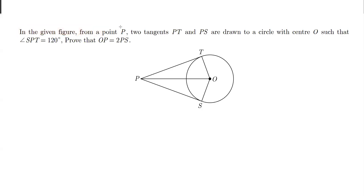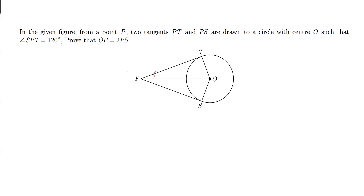In this given figure, we are given a point P which is an exterior point on the tangent, from where two tangents — PT and PS — are drawn to the circle with center O, such that the angle SPT is given as 120 degrees.